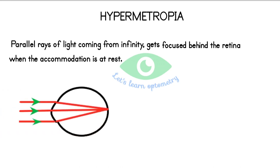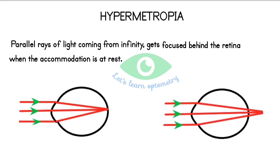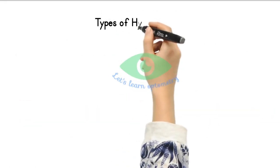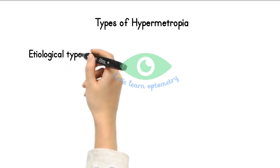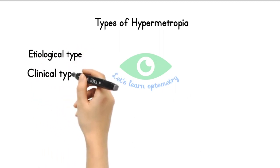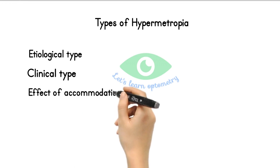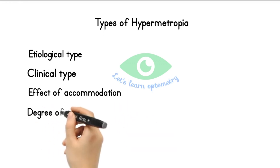Ideally, in an emmetropic eye with no refractive errors, the parallel light rays focus on the retina. But in a hypermetropic eye, it focuses behind it. We divide the types based on four groups: based on etiology, clinical type, effect of accommodation, and degree of refractive error.